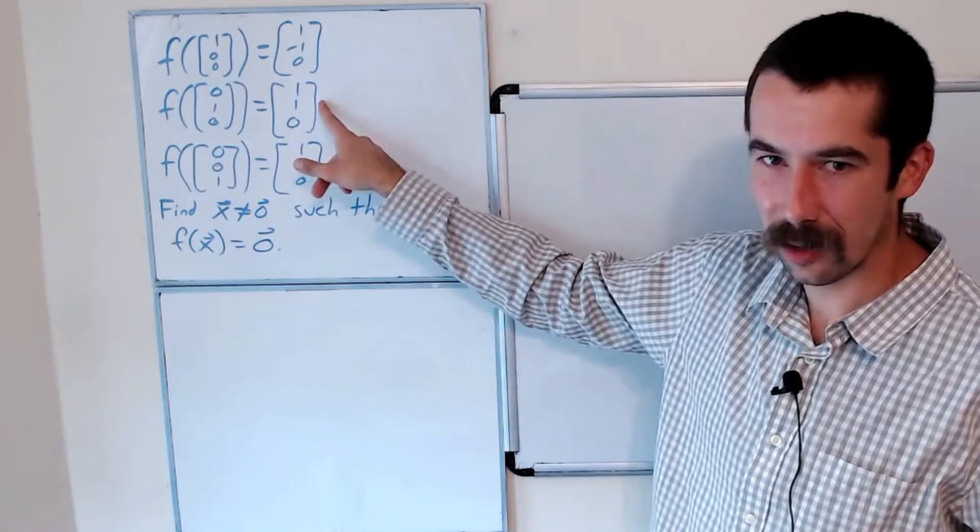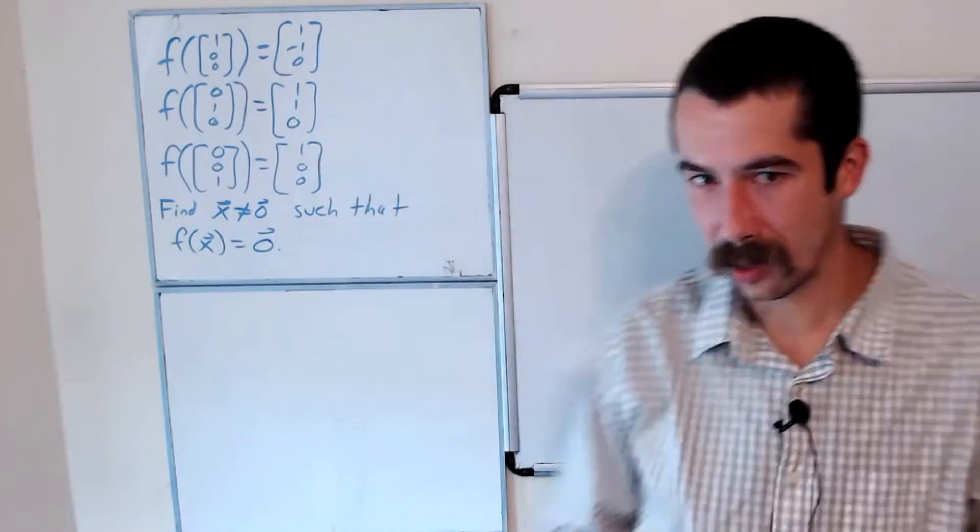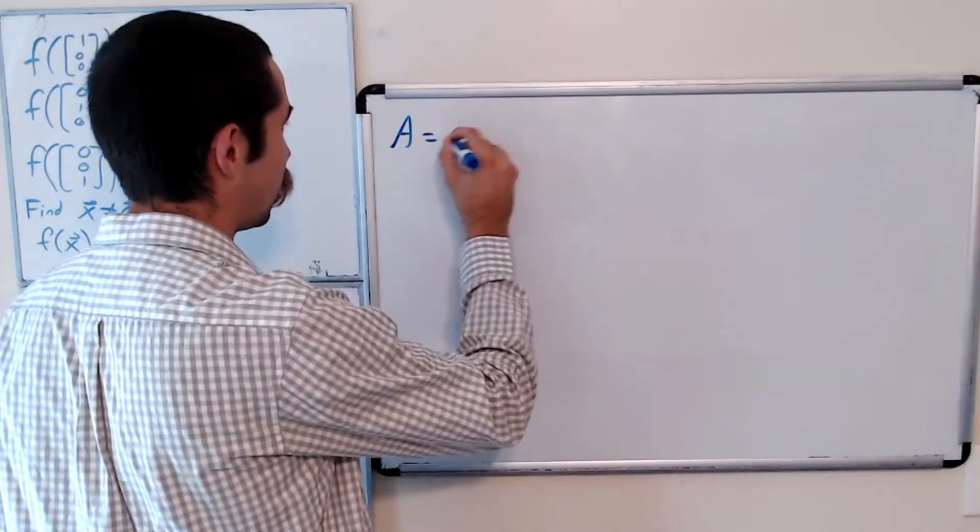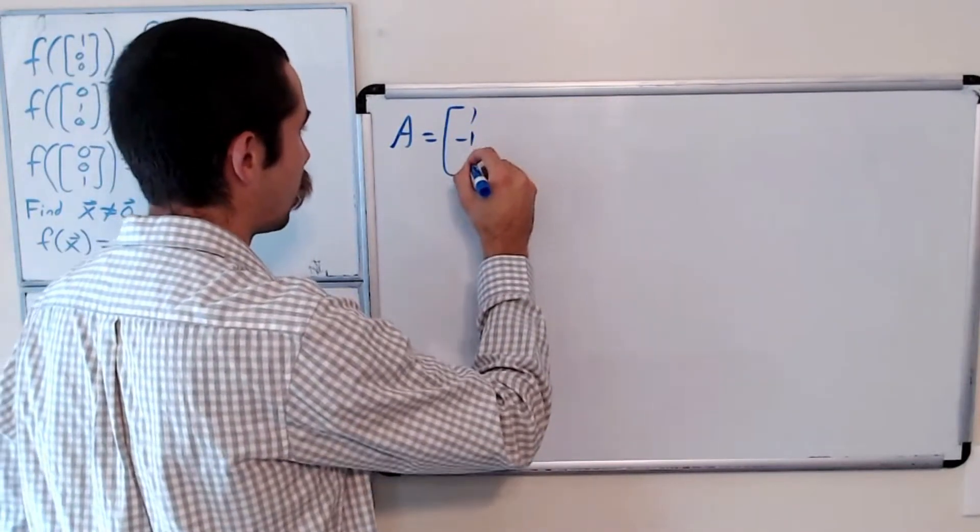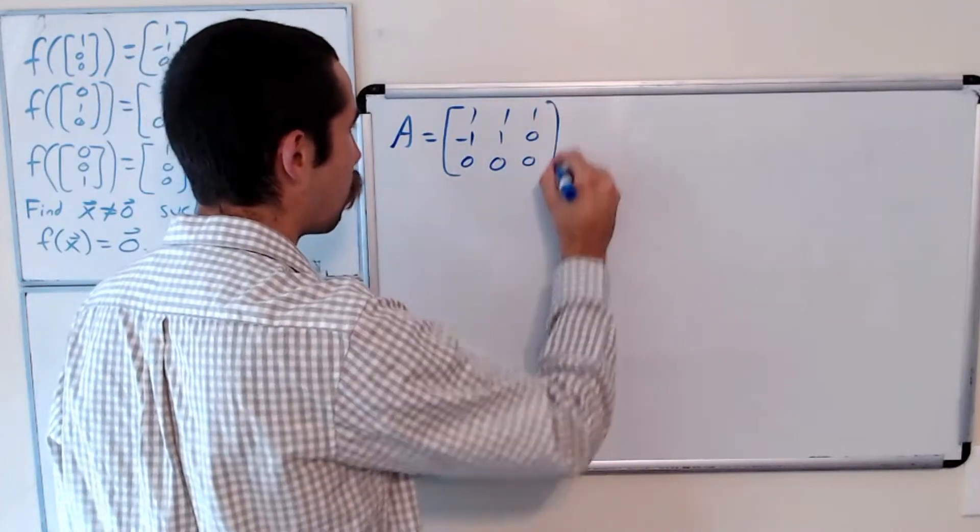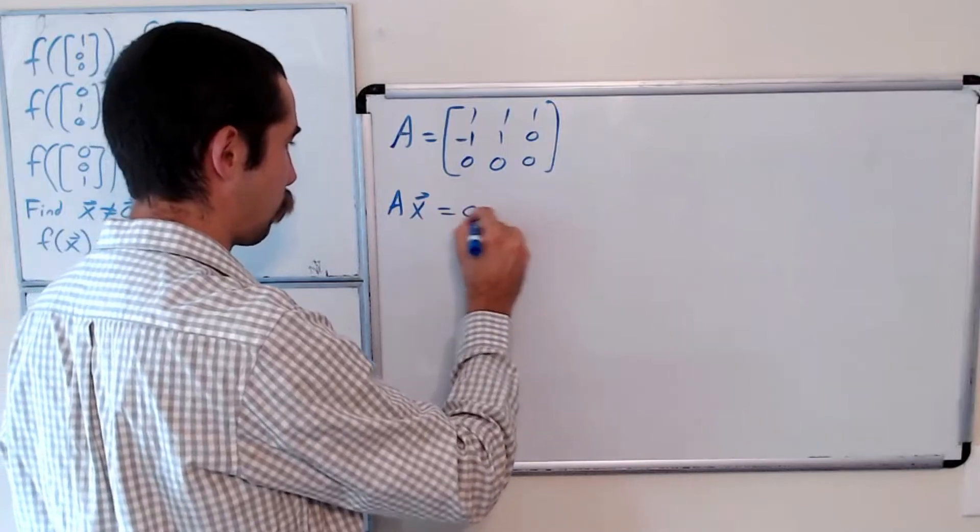Similarly, this is the second column of the matrix of our linear transformation, and this is the third column. So we have A, which is the matrix of our linear transformation. And we want to solve Ax = 0.